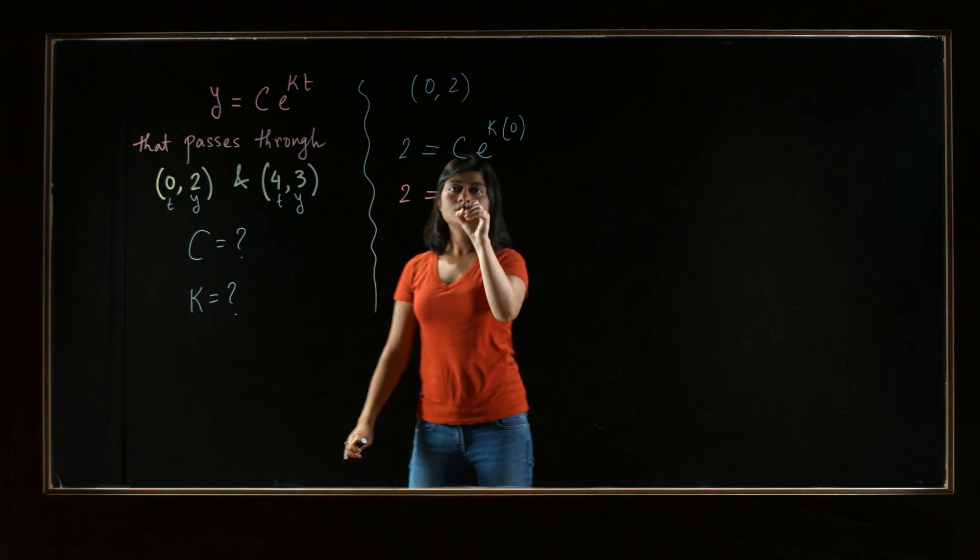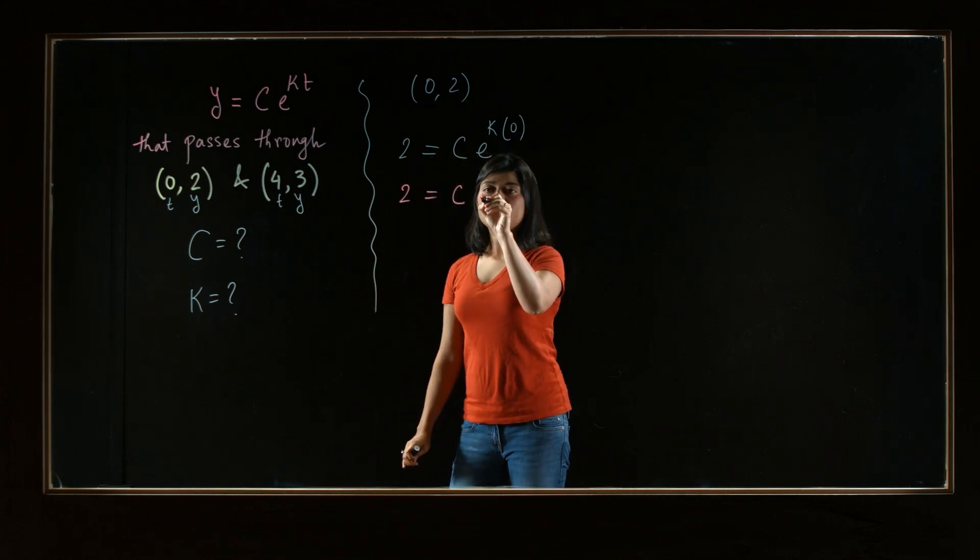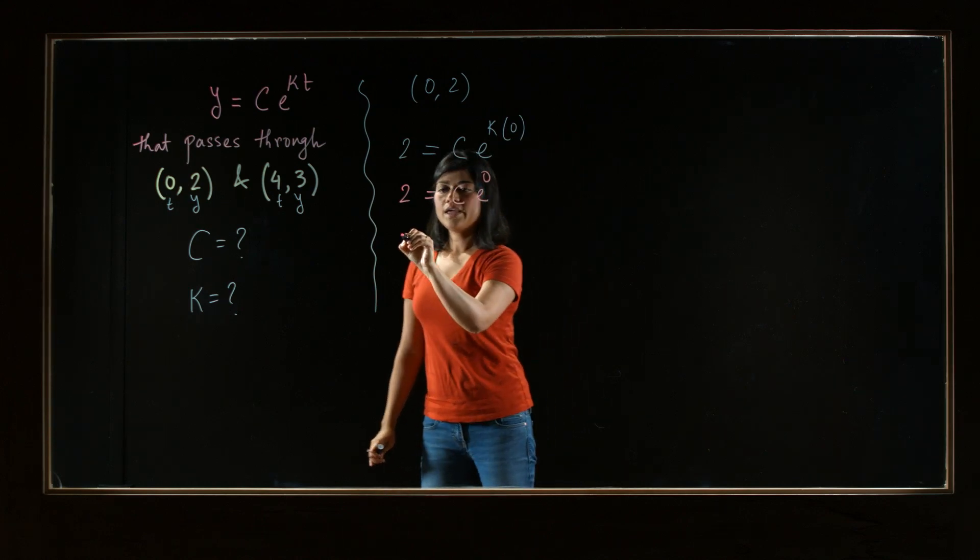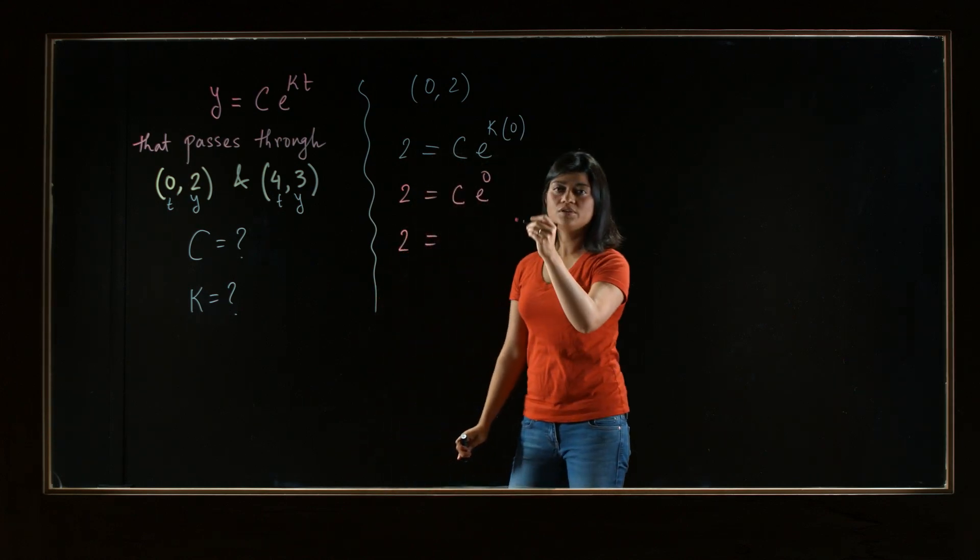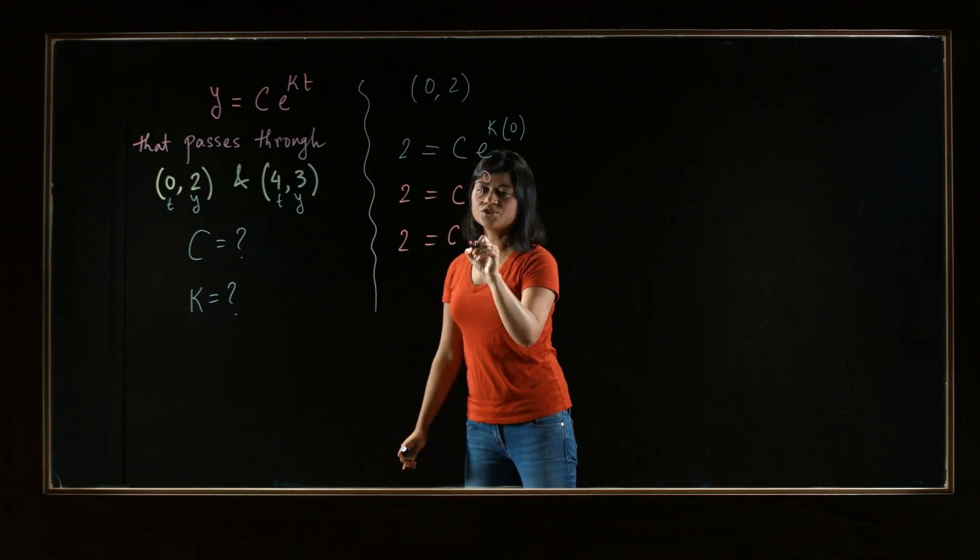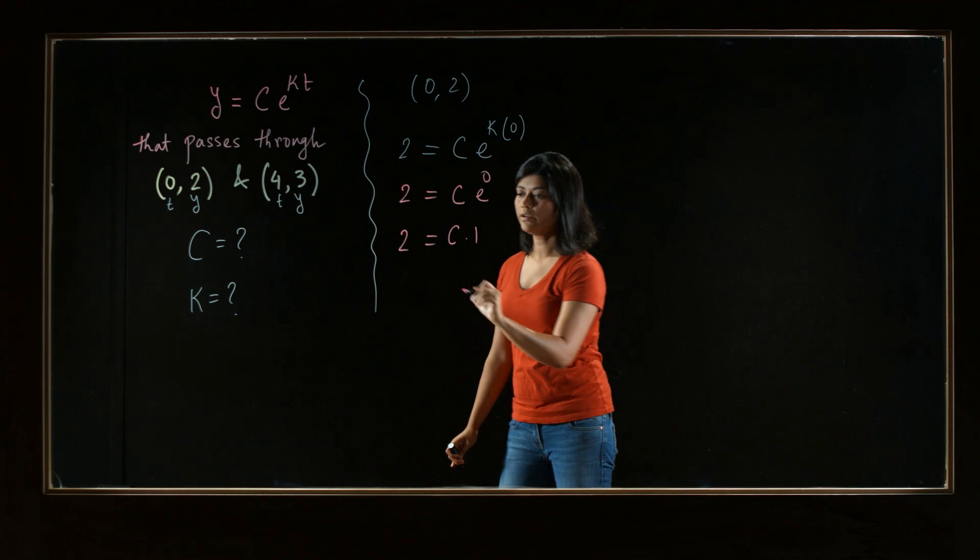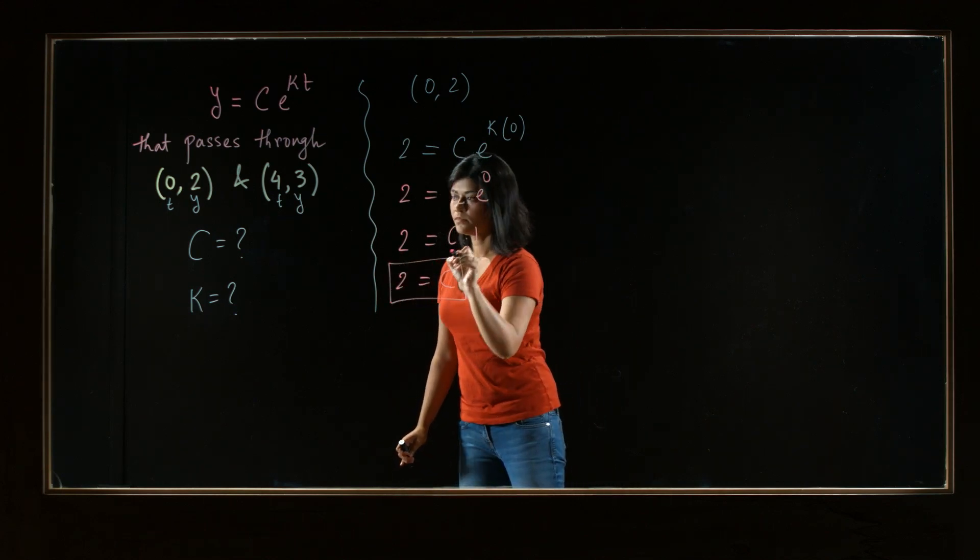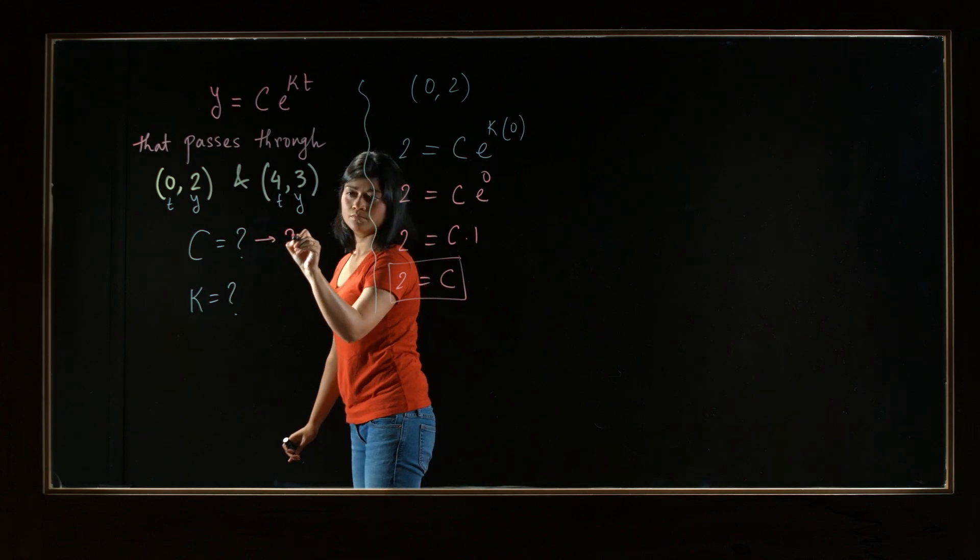So notice the right hand side is e to the power 0, because k times 0 is just 0. And e to the 0 is 1 by the property of exponent. So this is just c times 1. And therefore, we have the value for c. So c is 2.